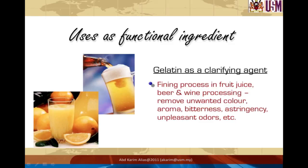Finally, let's look at the application of gelatin as a clarifying agent in the production of fruit juice. The fining process in the production of fruit juices, beer, and wine is used to remove unwanted color haze, bitterness, excessive astringency, and unpleasant odors. Gelatin is used not just for clarification and precipitation of substances causing turbidity, but also for reducing the concentration of polyphenols such as tannins. If done correctly, this process should produce a beverage with a good balance of taste, color, aroma, and clarity.